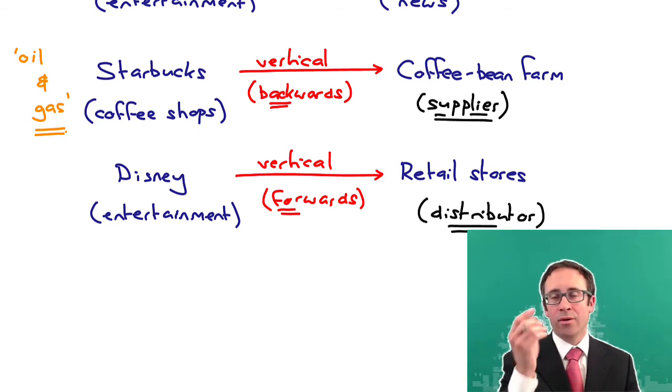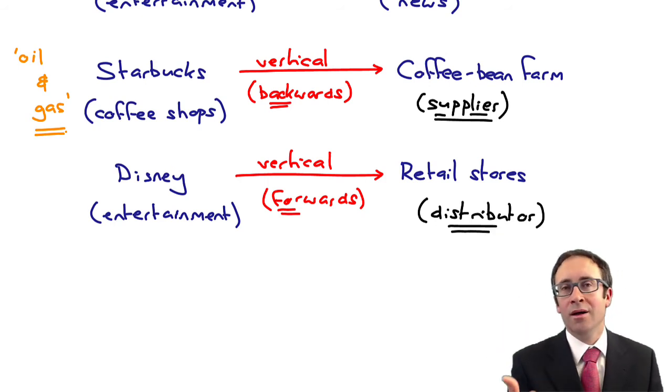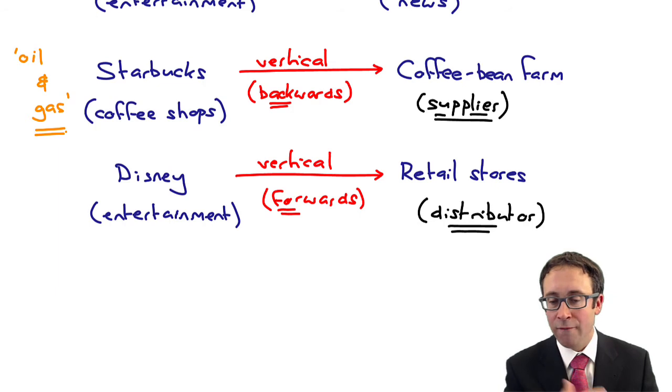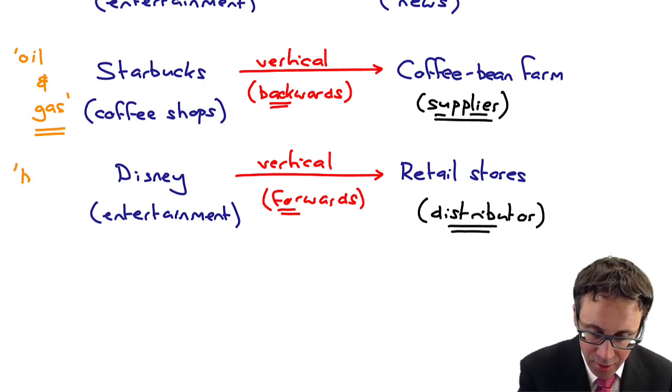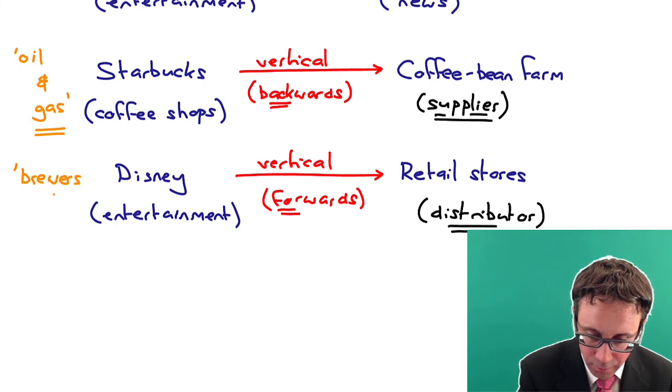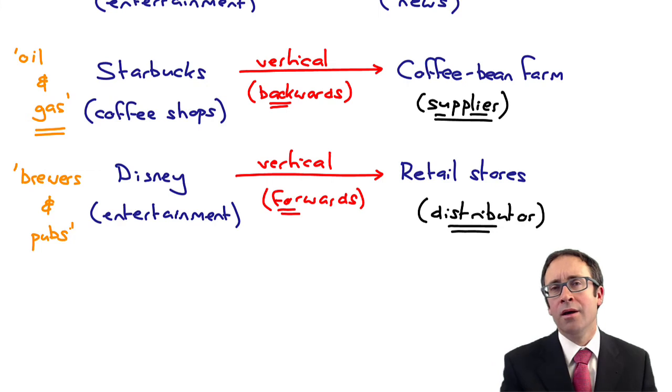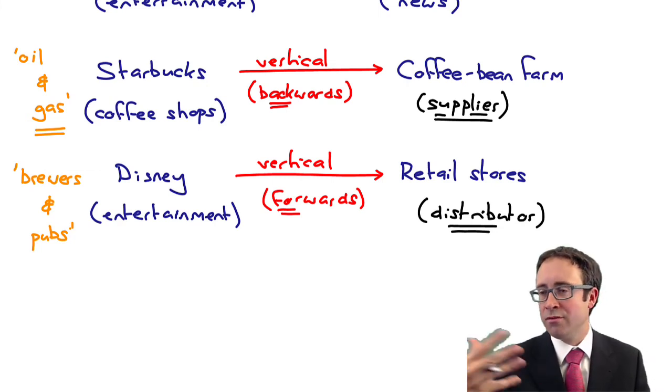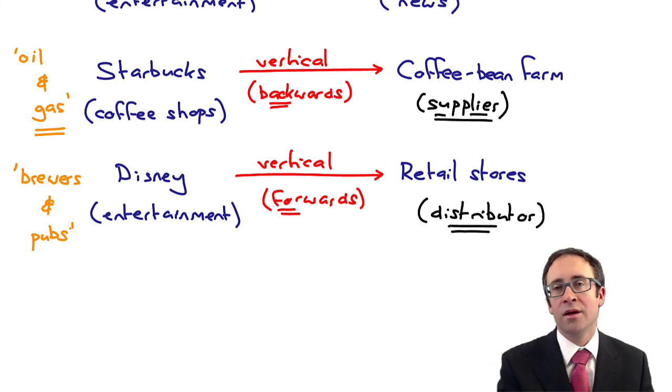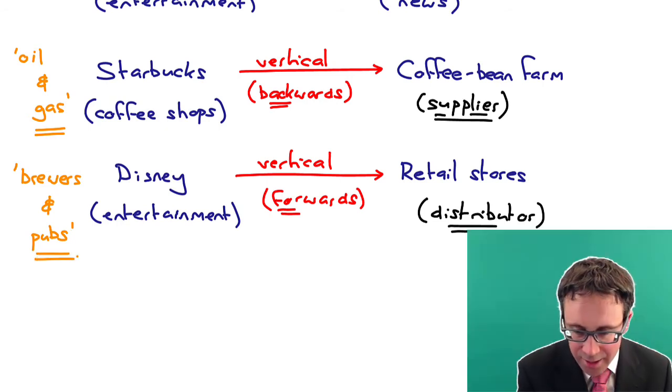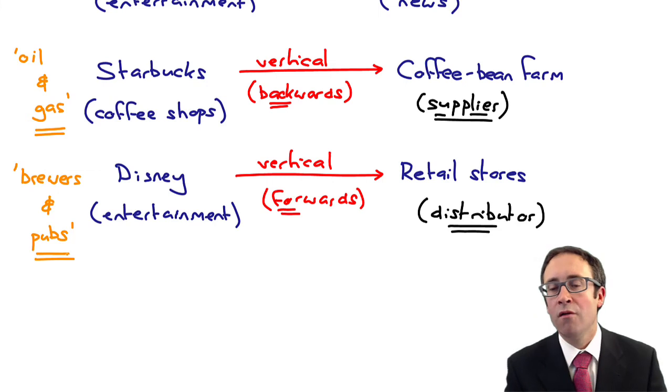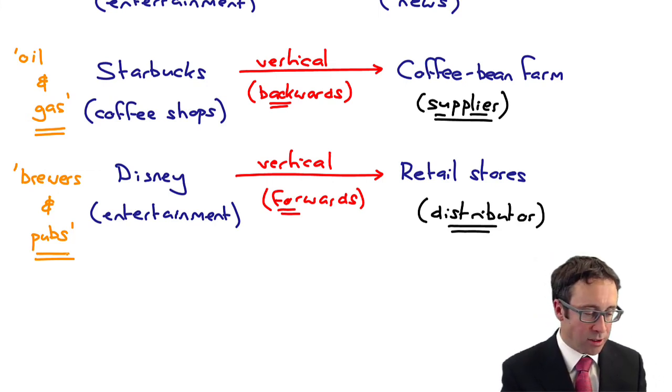Backwards vertical integration is very common in the oil and gas industry, whereby all of these oil and gas businesses are buying the drilling companies that take the oil and the gas out of the earth. And if you look at forwards vertical integration, that's very common when it comes to brewers brewing alcohol and pubs. You've brewed your lager - why then sell it to a different pub? Why don't you run the pub yourself and distribute your lager to the final customer that way?